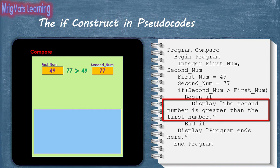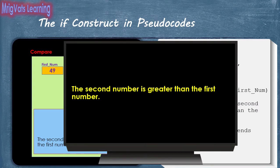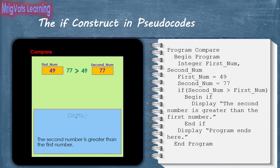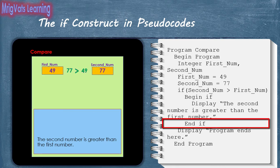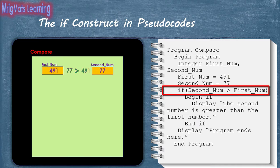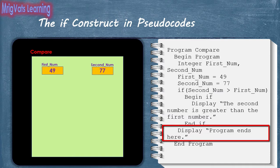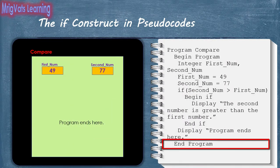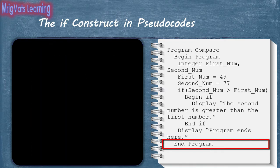When the display statement is run, the program writes 'the second number is greater than the first number' text in the memory allocated for the if construct and displays it on the virtual display board. The memory associated with the display statement is then released. As soon as the End If statement is run, the memory allocated for the if construct is released. However, if the expression evaluates to false, the program skips the body of the if construct and control directly moves to the display statement immediately after the if construct. That statement — 'program ends here' — is run irrespective of the if construct. As soon as the End Program statement is run, the entire memory associated with the program is released for other activities of the computer.